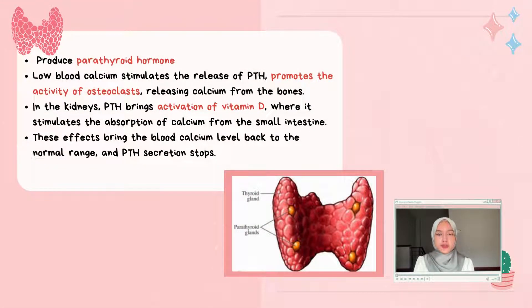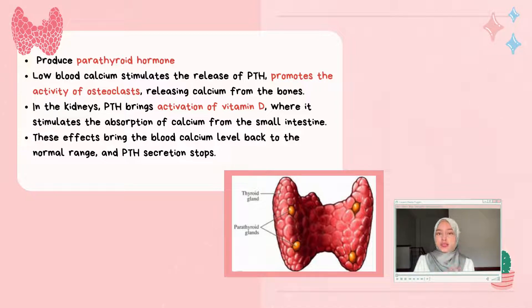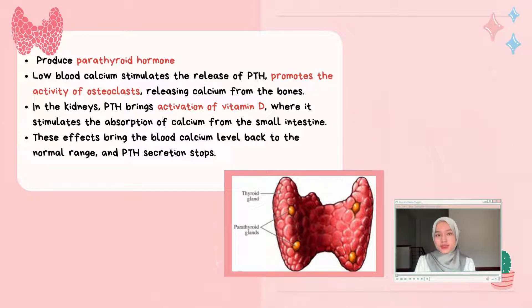The parathyroid glands are embedded in the posterior surface of the thyroid gland. Low blood calcium stimulates the release of parathyroid hormone, which promotes the activity of osteoclasts, releasing calcium from the bones. In the kidneys, parathyroid hormone activates vitamin D, which stimulates the absorption of calcium from the small intestine. These effects bring blood calcium levels back to the normal range, and parathyroid hormone secretion stops.